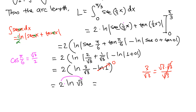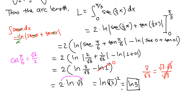This is a good answer, but we can simplify further. The 2 outside can be brought inside the logarithm as an exponent: 2·ln(√3) = ln((√3)²). Since (√3)² = 3, the final answer simplifies to ln(3). You may also leave it as 2·ln(√3).